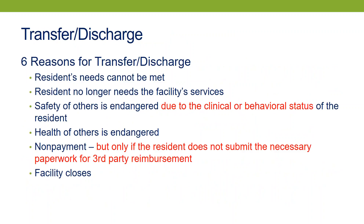Now starting with the six reasons for transfer and discharge — these are familiar to anyone who has done nursing facility work. The red language here indicates some changes. The first change is that the 'safety of others' reason is purportedly limited by the requirement that this applies only when the endangerment is due to the clinical or behavioral status of the resident, although in most cases when the safety of others is cited, the allegations relate to the clinical or behavioral status anyway.